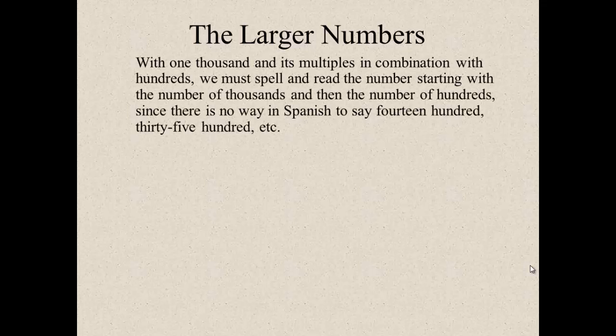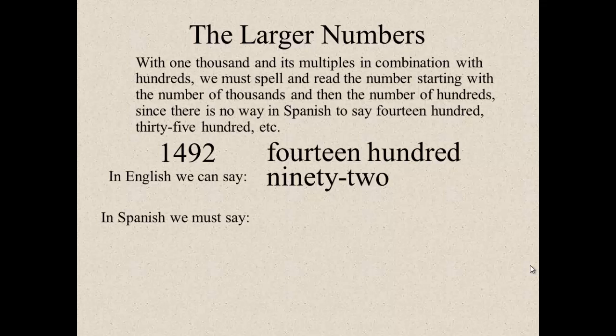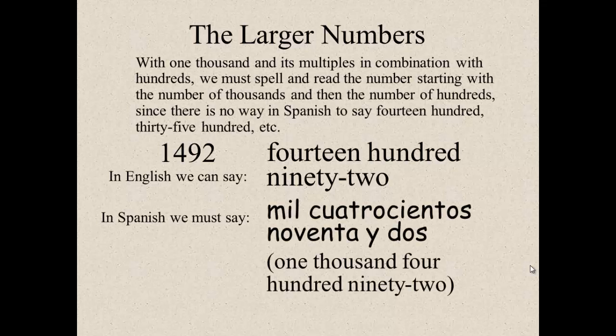With one thousand as multiples in combination with one hundredths, we must spell and read the numbers starting with the numbers of thousands and then the numbers of hundreds, since there is no way in Spanish to say fourteen hundred or thirty-five hundred. For example, we don't say, in English we say fourteen hundred and ninety-two. In Spanish, we say one thousand four hundred and ninety-two. So, mil cuatrocientos noventa y dos.